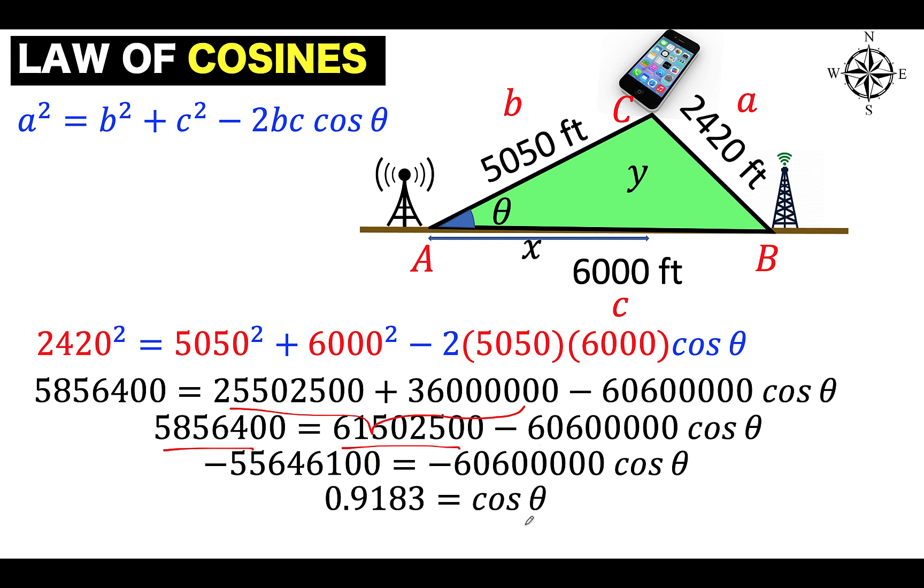Now when you arrive here, you have 0.9183 equals cosine theta. And to solve now for the angle, we are going to use the inverse cosine. So arc cosine of 0.9183 gives us a value of approximately 23.3 degrees for the measure of angle CAB, denoted as theta. So we now know what is the measure of that angle.